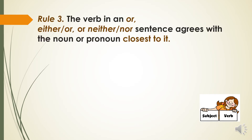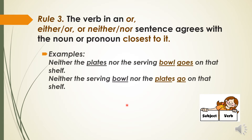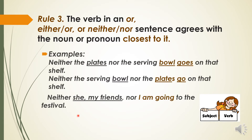The next rule says: the verb in 'or', 'either or', or 'neither nor' sentences agrees with the noun or pronoun closest to it. For example, 'Neither she, my friend, nor I am going to the festival.' The closest subject is 'I', and we agree the verb with this subject.